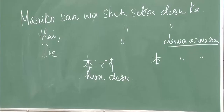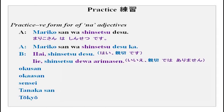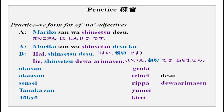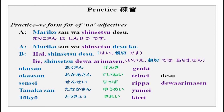You can replace Mariko-san with any noun and shinsetsu with any na-adjective. Okusan wa genki desu. Okusan wa genki desu ka? Hai, genki desu. Iie, genki dewa arimasen. You can do it in a similar manner with your partner. These are words in hiragana.